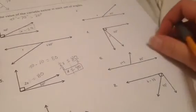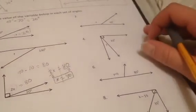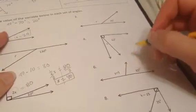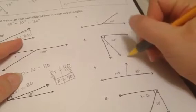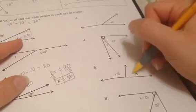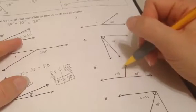Alright, so for number 6, it's going to be a similar process. We just have addition to start out with instead of multiplication. So if we have y plus 5 over here and 85 over here, we just want to figure out what this total angle needs to be.